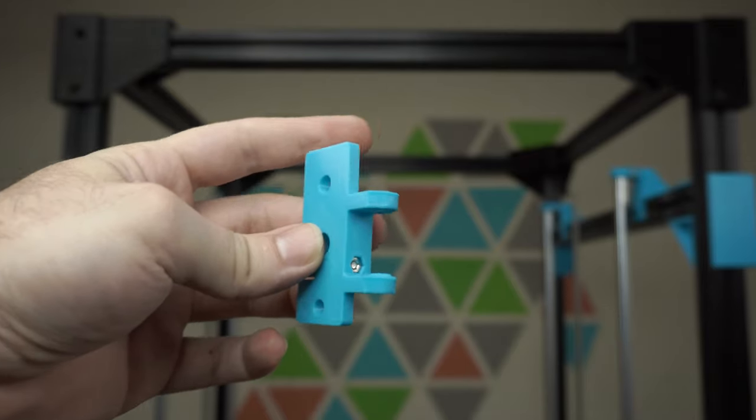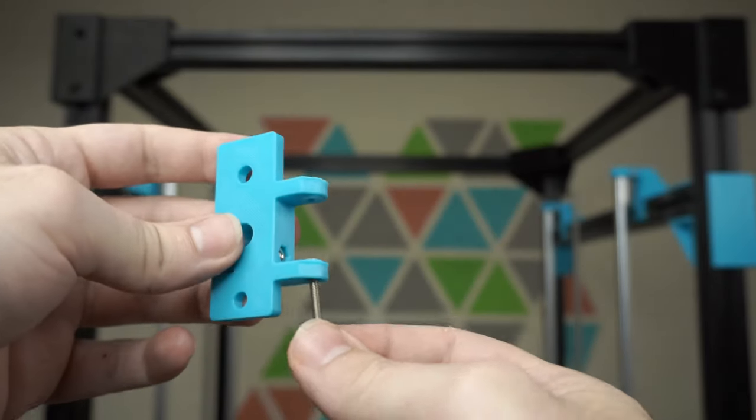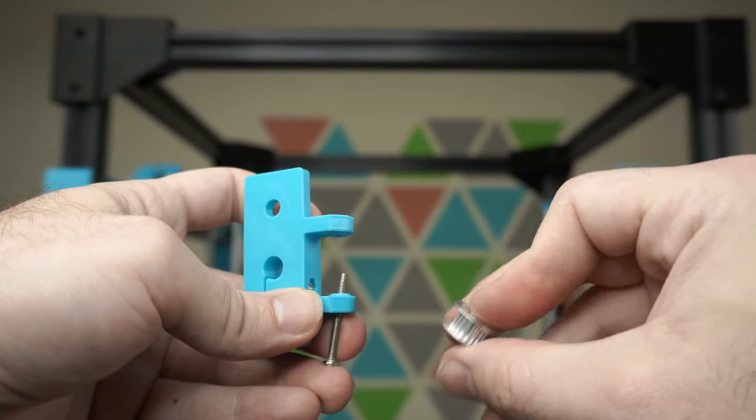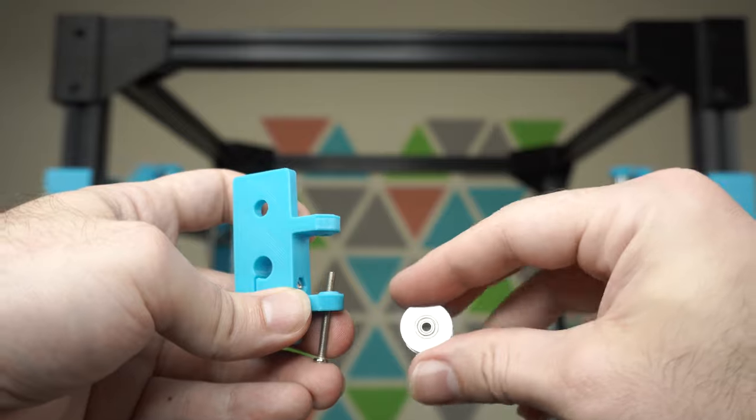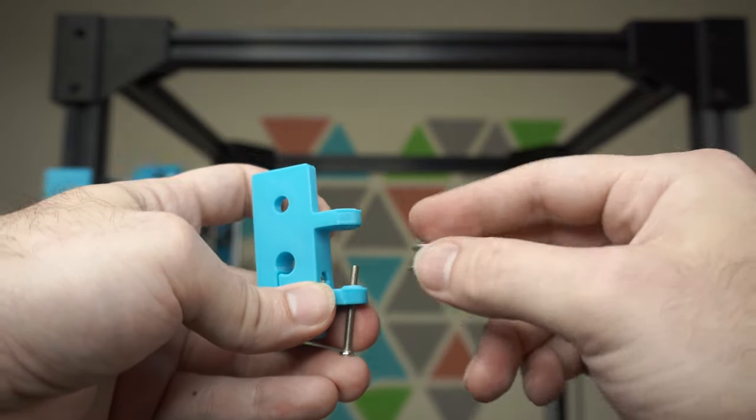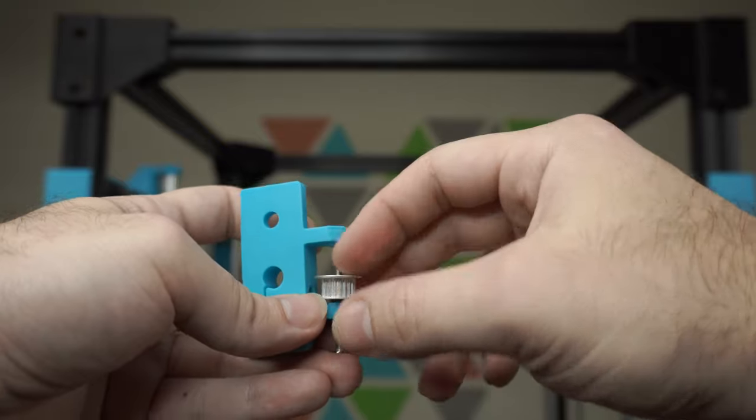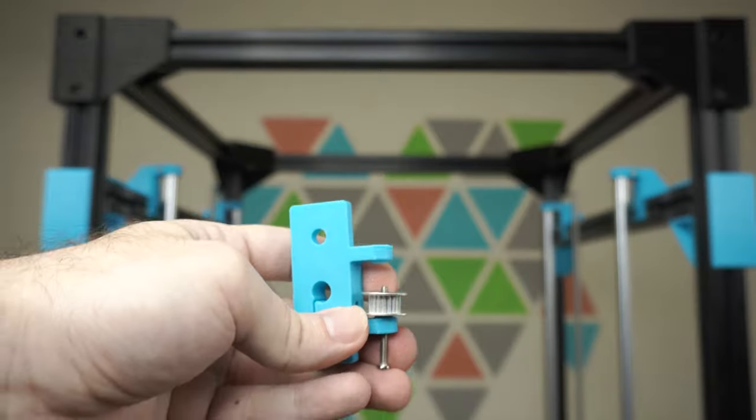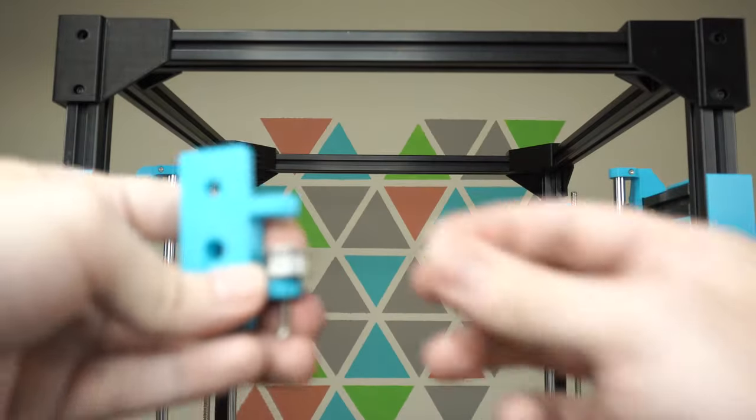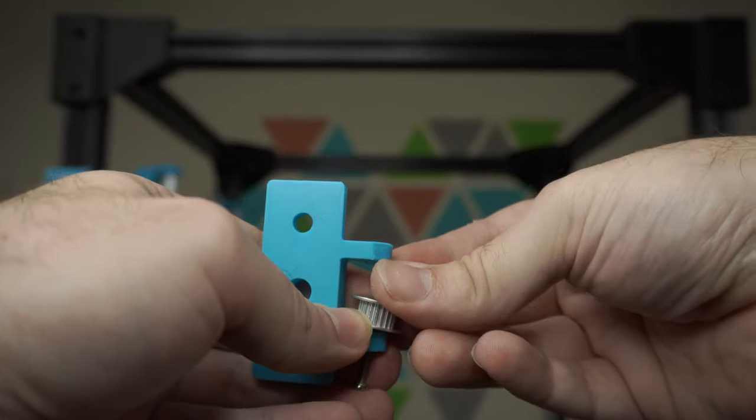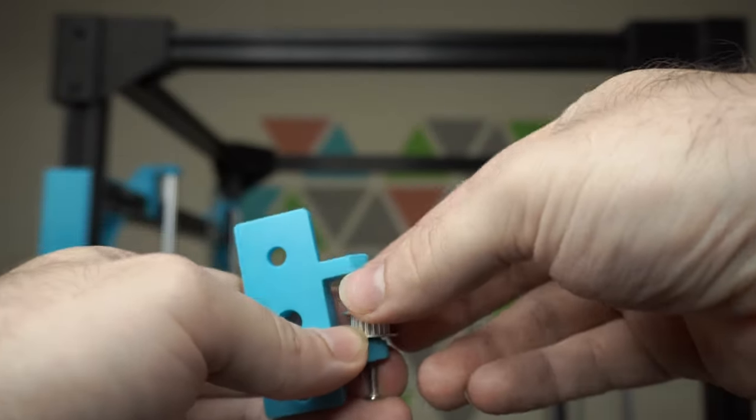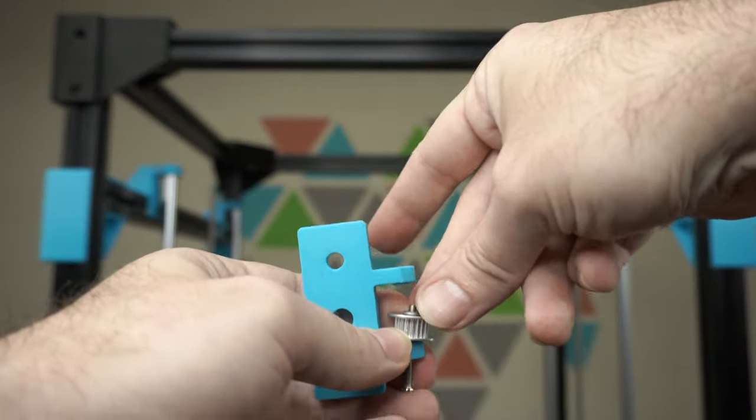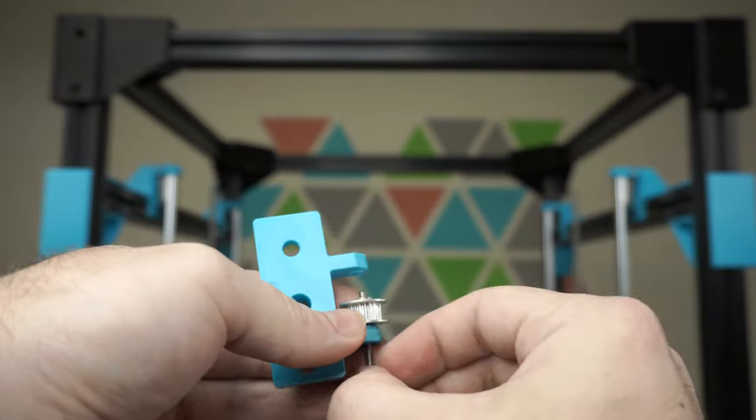Okay, so this is the idler mount. You want to have an M3 by 30 screw, and then you take your pulley—make sure that it has the three millimeter bearing—and you'll slide one over the bolt and leave a little bit sticking out. We're going to add two washers in between the pulleys. This is kind of difficult to do. There's one, two, and then we need to add in the other pulley.